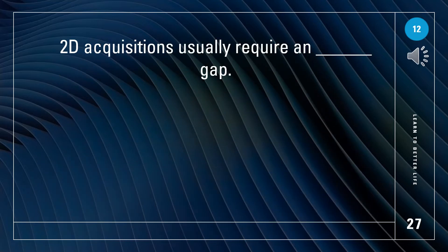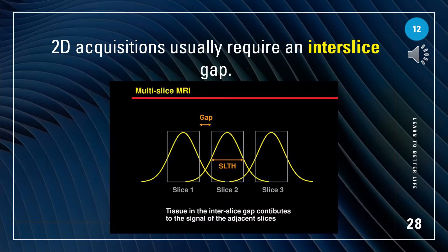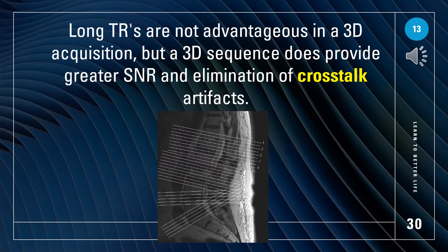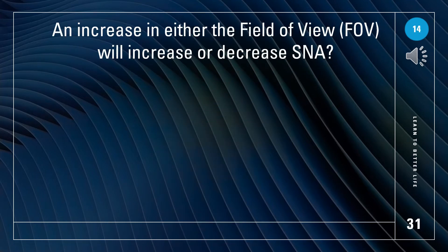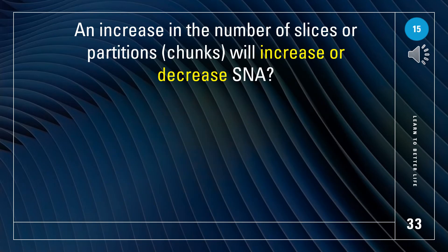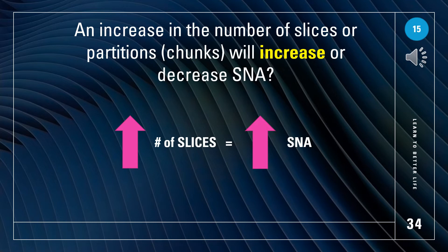2D acquisitions usually require an inter-slice gap. Long TRs are not advantageous in a 3D acquisition, but a 3D sequence does provide greater SNR and elimination of cross-talk artifacts. An increase in field of view will increase SNR. An increase in the number of slices or partitions will also increase SNR.